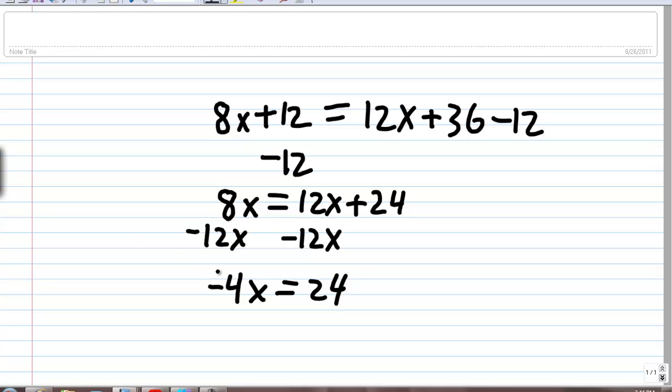It's okay that we have this negative 4 here. It just means that we need to get rid of this negative 4 by, once again, doing the same thing to both sides until we have a value for x. So if we divide both sides by negative 4, then we will end up with x all alone on this left side, and x will be equal to negative 6.